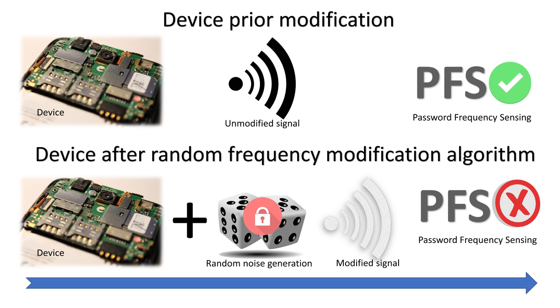This is often based on microscopic phenomena, and what it does is generate low-level statistically random noise signals. In our case we use the beam splitter. These stochastic processes in theory are completely unpredictable, and they prevent the process of Password Frequency Sensing — as our aim is always to keep the world a safer place.